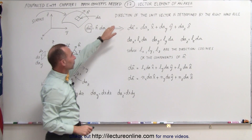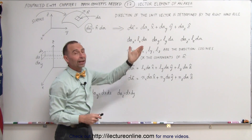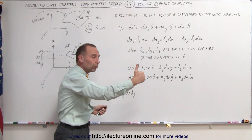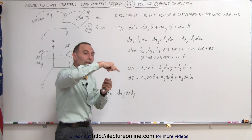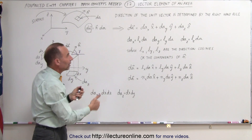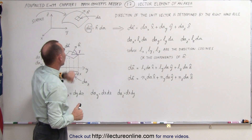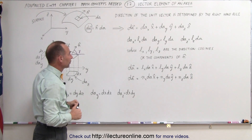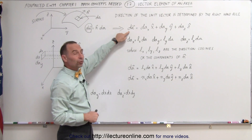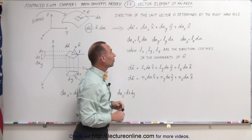Notice that the direction of the unit vector is determined by the right-hand rule: simply move your fingers around in a counterclockwise direction around the little dA element and your thumb will point in the direction of the unit vector. Notice we can now express the unit vector in terms of the x, y, and z coordinates like this.